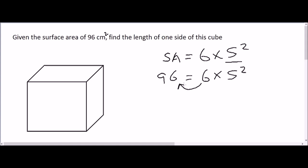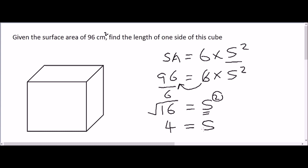Because 6 is multiplied on the right-hand side, you divide on the left-hand side: 96 divided by 6 equals 16, which crosses off the 6 from the right-hand side, leaving s squared. To remove the squared sign you square root 16, because you need to make 's' the subject of the formula. The square root of 16 is 4, so the side length is 4 centimeters.